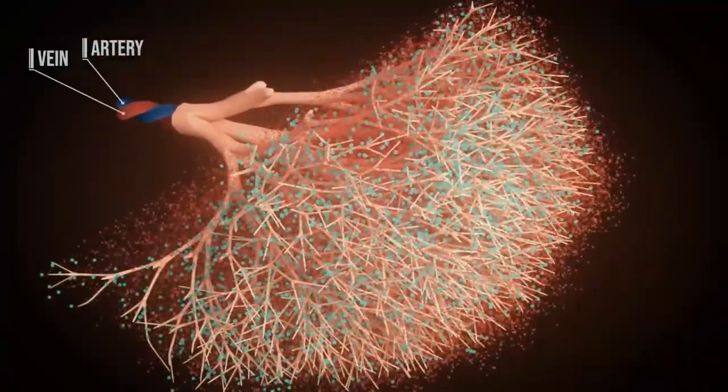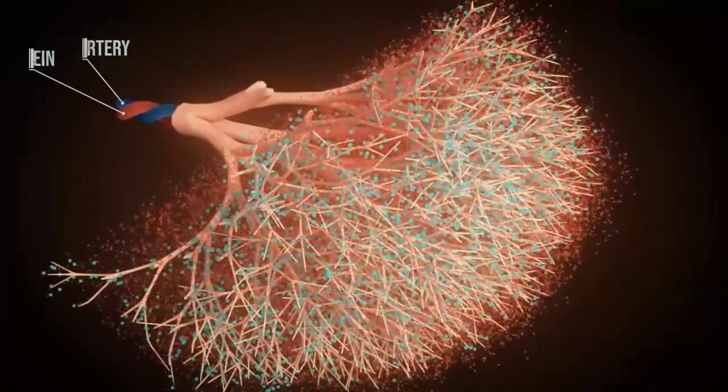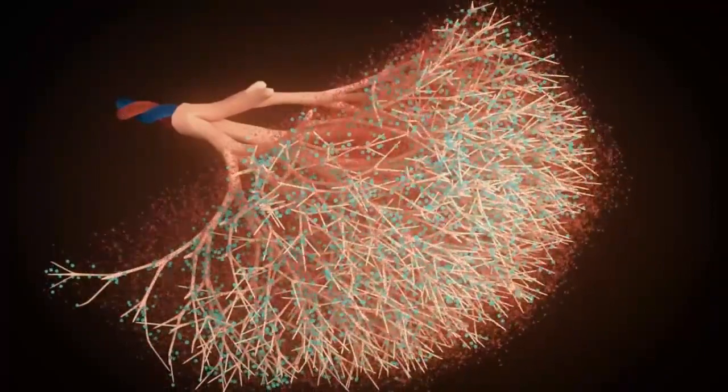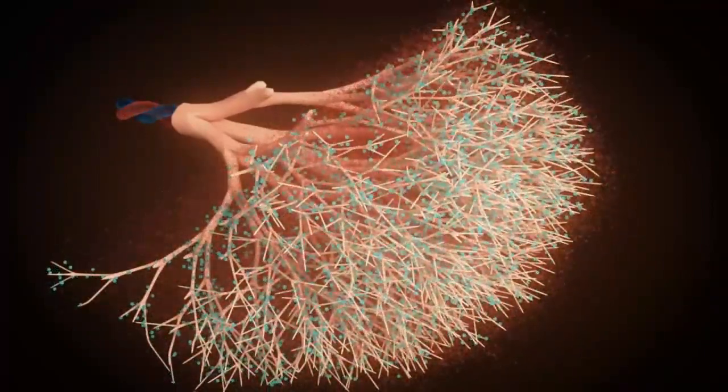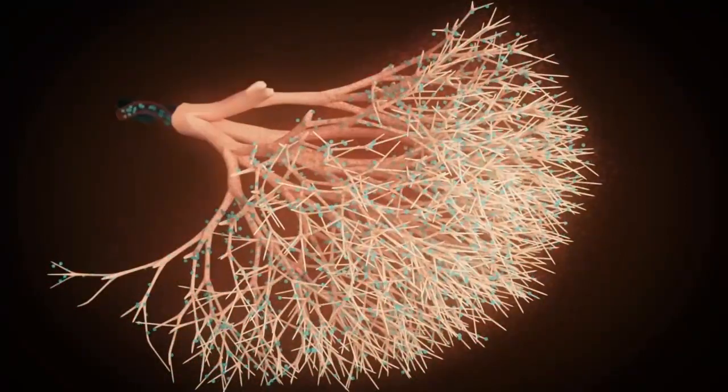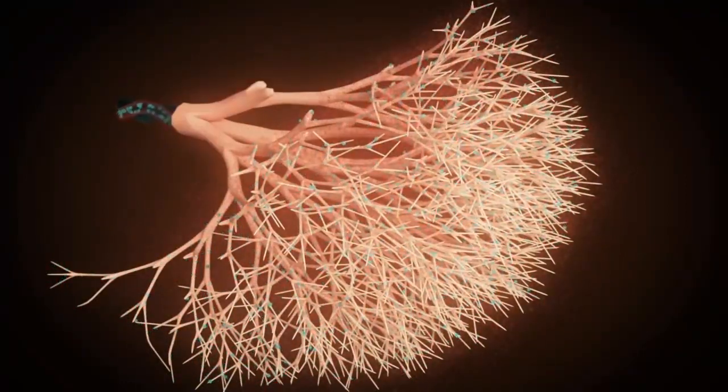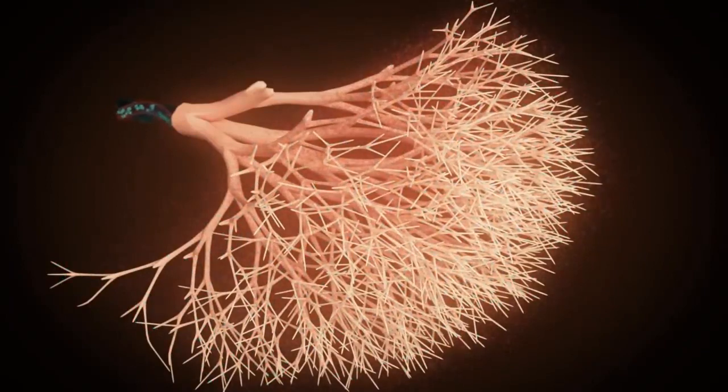The chorionic villi extract oxygen and necessary nutrients from the mother's blood. Nutrients include carbohydrates, amino acids, fats, vitamins, and iron. Oxygen and nutrients are then transported to the fetus via the veins with the help of the umbilical cord.